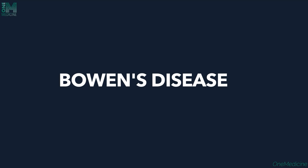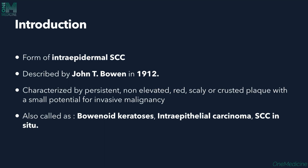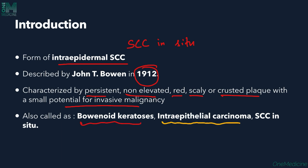Welcome to One Medicine. Today I'll be discussing Bowen's disease. Bowen's disease is a form of intraepidermal squamous cell carcinoma — it is a squamous cell carcinoma in situ. It was first described by John T. Bowen in 1912. We see a persistent non-elevated red scaly or crusted plaque with a small potential for invasive malignancy. Bowen's disease is also called bowenoid keratosis, intraepithelial carcinoma, or squamous cell carcinoma in situ.